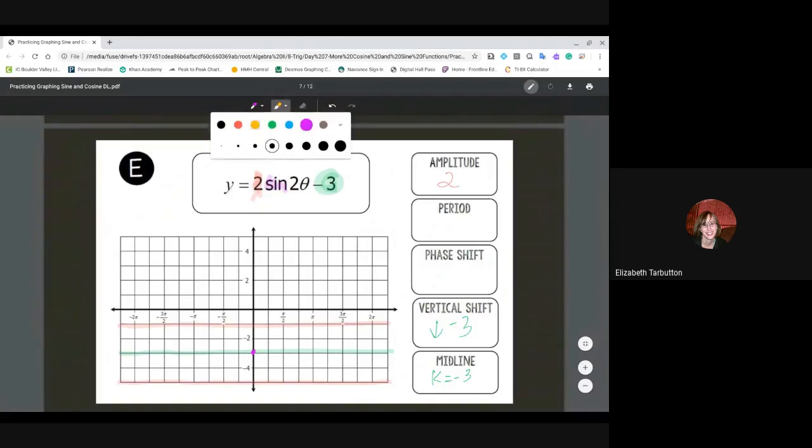The next thing that we want to take a look at is our period. We can identify that b is two. So to find our period, period equals 2π over b, which in this case is two, so period equals π. And again, remember we're not going to worry about our phase shifts—we're going to do none for phase shifts because we're not worrying about that right now.